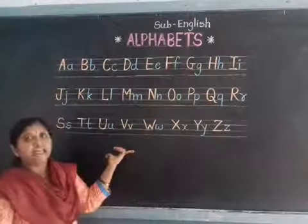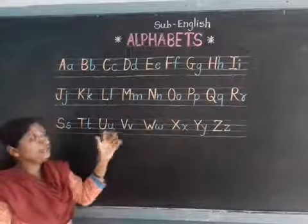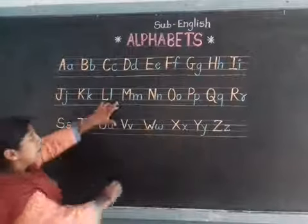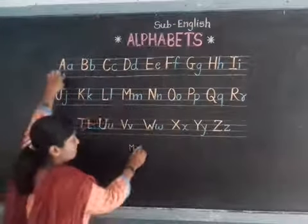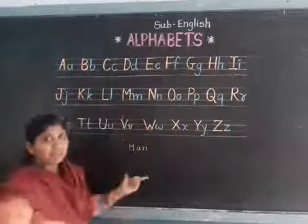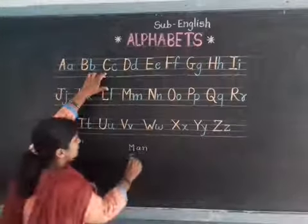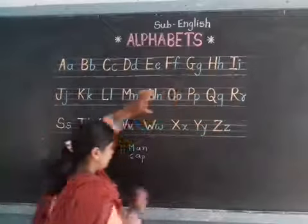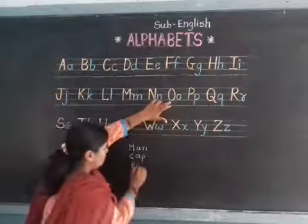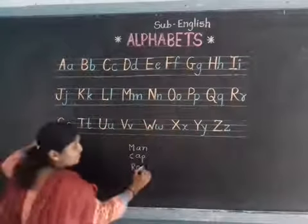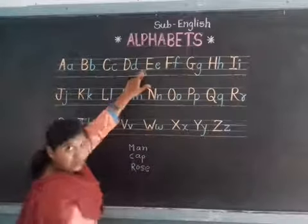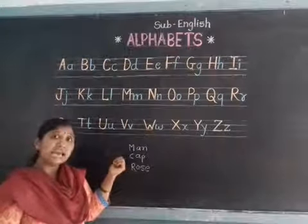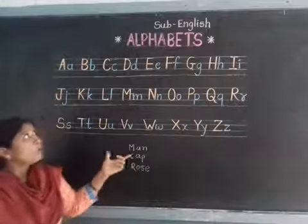Ok students, these all are 26 alphabets. With the help of these alphabets, you can make many meaningful words. For example: M, A, N — Man. Like this: C, A, P — Cap. Then R, O, S, E — Rose. Means students, with the help of these alphabets, you can make two letter words, three letter words, four letter words or five letter words. In this way, today we have learnt alphabets.